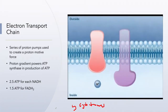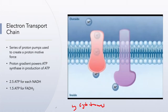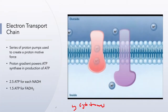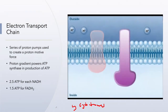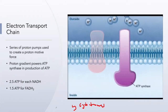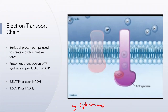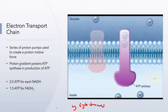Proton pumps are protein complexes that move the protons generated during oxidation reactions across the cell membrane. As the protons move through the proton pump, they build up on the outside of the membrane, creating a concentration gradient. The membrane is not permeable to charged hydrogen ions, so they cannot diffuse back across. Instead, they must pass through a special channel — the enzyme ATP synthase — which uses the energy from proton movement to convert ADP into ATP. This mechanism is called chemiosmosis.